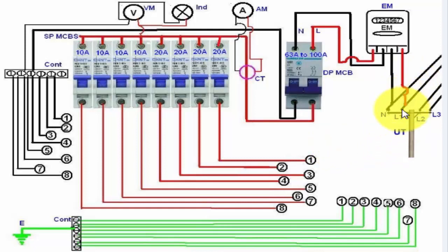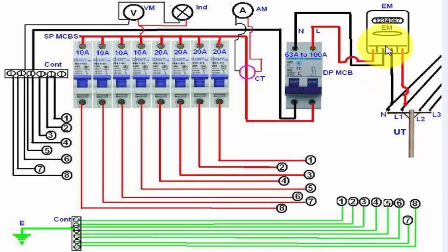The three phase four wire system supply comes in to the utility fold, and in single phase we have only neutral and phase. So we connect the neutral and phase in the utility fold, and this supply goes to the energy meter, and from the energy meter the supply goes to the distribution board.